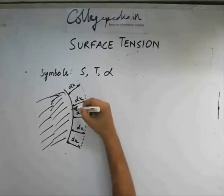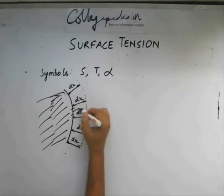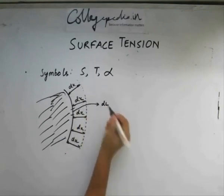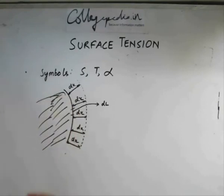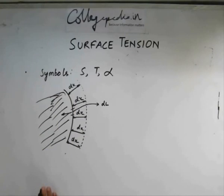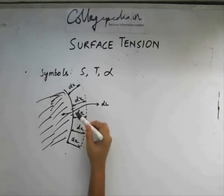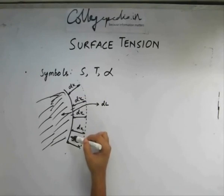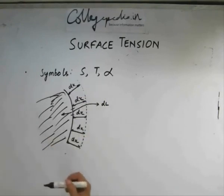Let us consider a small element of length dl. What the liquid will be tending to do or the tendency of the liquid will be to pull this surface inwards this way to reduce the surface area. If we can apply certain force or do some work on this surface so that the liquid cannot push it inside, we can prevent the tendency of the liquid to shrink its surface.